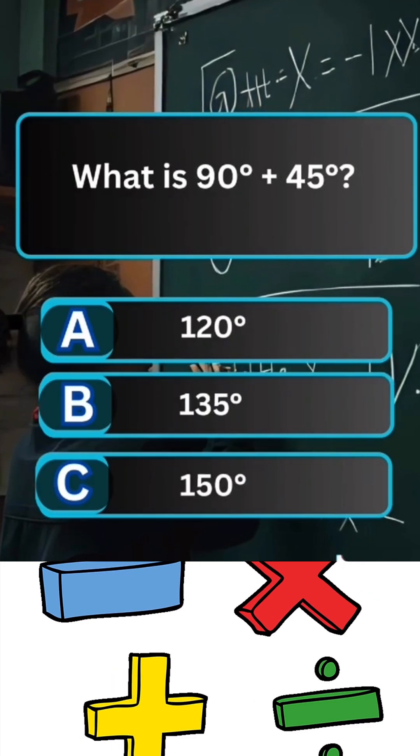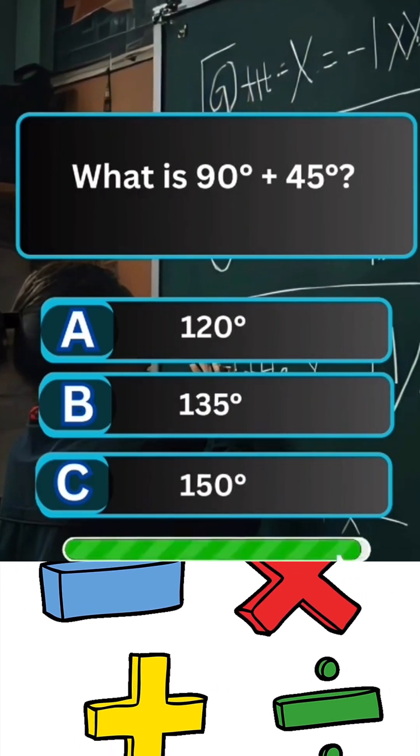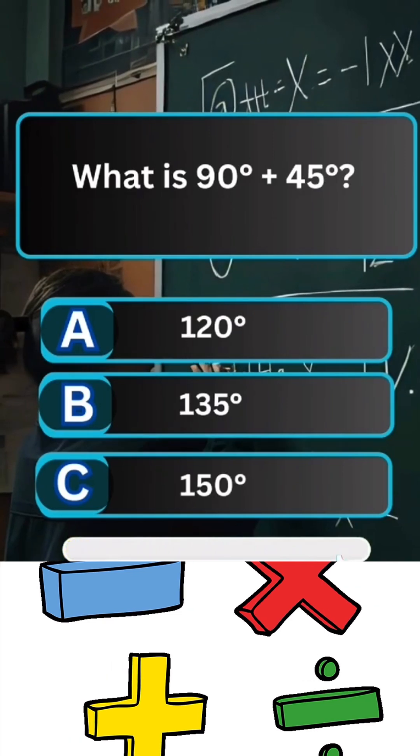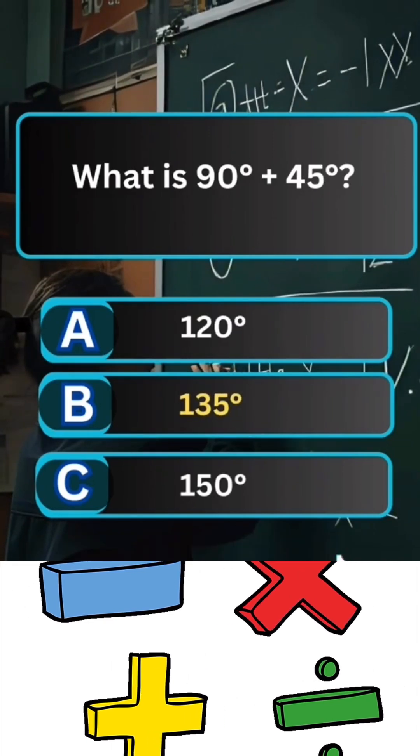Question 8. What is 90 degrees plus 45 degrees? Answer B. 135 degrees.